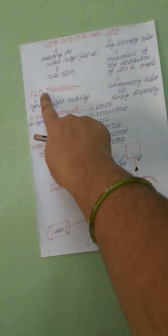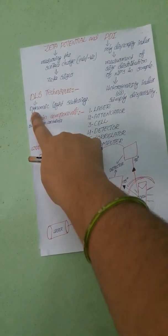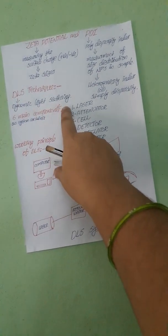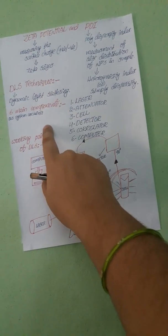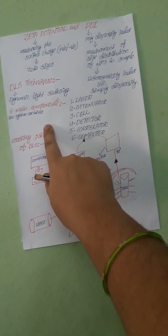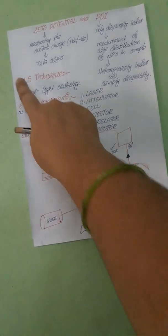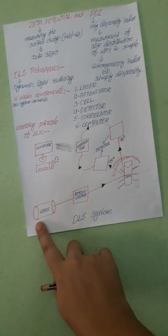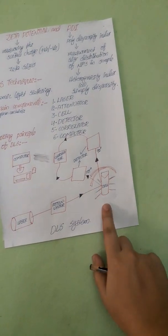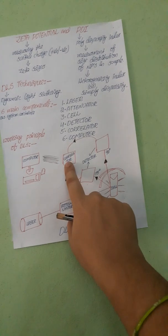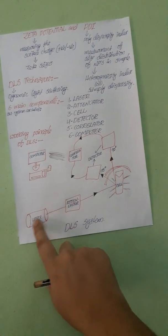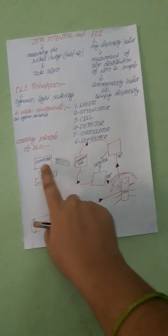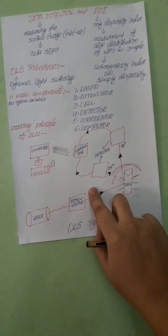For measuring both zeta potential and polydispersity index, we use one technique called the DLS technique — that is dynamic light scattering. This dynamic light scattering system contains six main components: laser, attenuator, cell, detector, correlator, and computer.